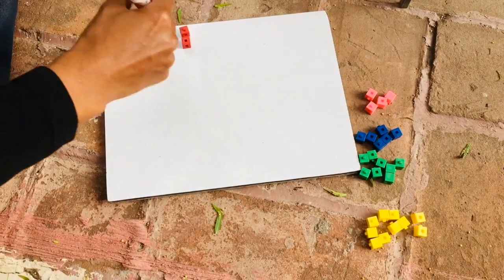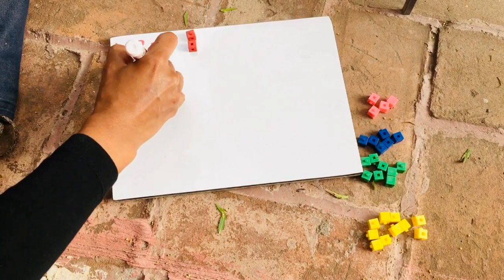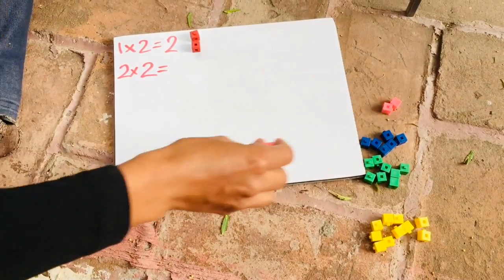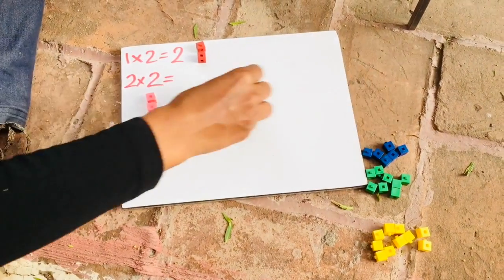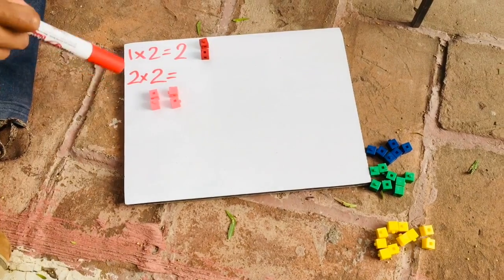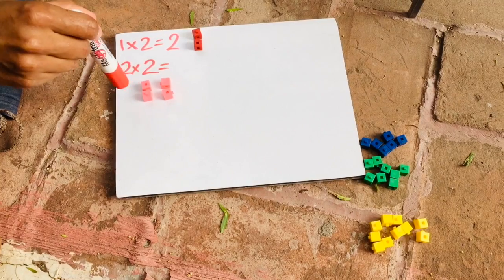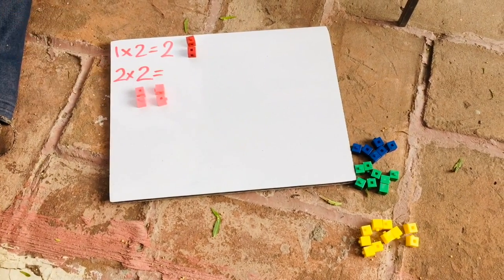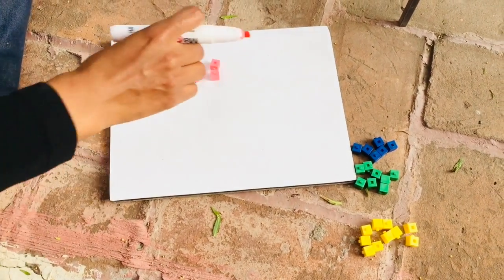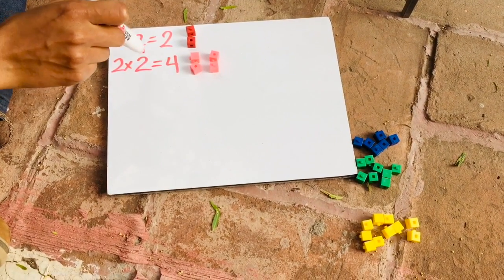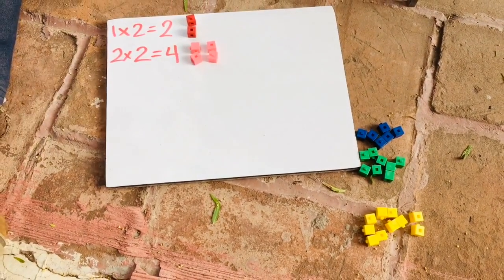As a result I get two. The next one is two times two, and that means we're going to add one group of two and two groups of two, because this is two times the number two, which would be two, four. Now it's going to be easier for us because we know how to count by twos. Two times two equals four, and here we have our four blocks.